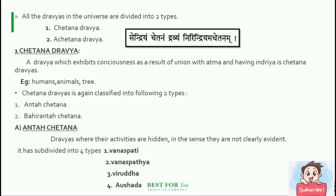All the Dravyas in the universe are divided into two types: Chetana Dravya and Achetana Dravya. A Dravya which exhibits consciousness as a result of union with Atma and having Indriyas is called Chetana Dravya — examples are humans, animals, trees, etc. Chetana Dravya is again classified into two types: Antaha Chetana and Bahiranta Chetana. Antaha Chetana refers to Dravyas whose activities are hidden and not clearly evident, subdivided into four types: Vanaspati, Vanaspatya, Viruddhi, and Aushadha.